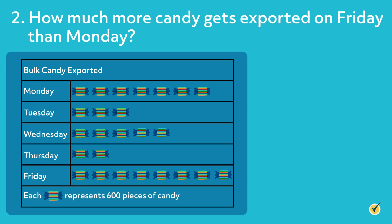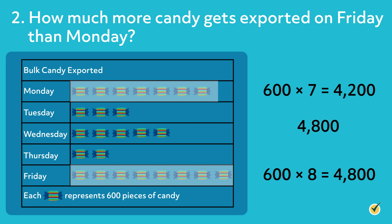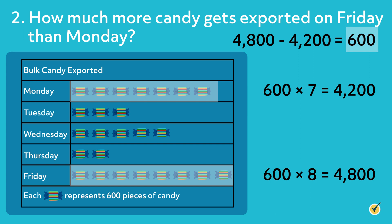How much more candy gets exported on Friday than on Monday? First, figure out how much candy gets exported on Friday. Remember that each symbol represents 600 pieces of candy. Since there are eight symbols next to Friday, multiply 600 times 8, which equals 4,800. Since there are seven symbols next to Monday, multiply 600 times 7, which equals 4,200. To find out how much more candy gets exported on Friday, subtract to find the difference. 4,800 minus 4,200 equals 600. Therefore, 600 more pieces of candy get exported on Friday than on Monday.